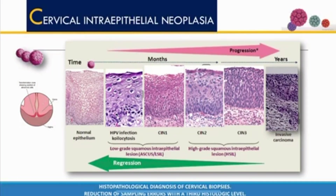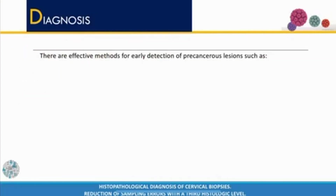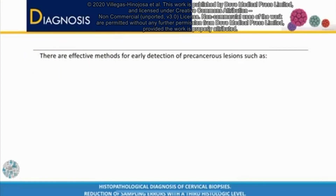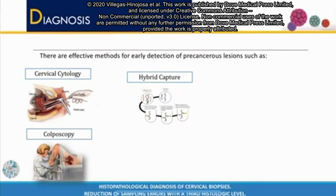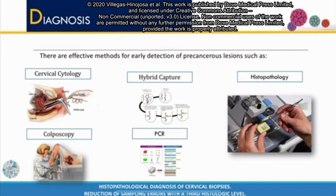And when pleomorphic cells break the basal layer and affect the stroma, it is considered an invasive carcinoma. There are effective methods of early detection of precancerous lesions such as cervical cytology, colposcopy, hybrid capture, and PCR. The most accurate diagnosis is the histopathological study. However, certain methodological improvements have been suggested.